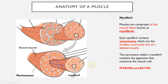Each myofibril contains a sarcomere. A sarcomere is the smallest contractile unit of a skeletal muscle — this is what contracts. It contracts because the sarcomere holds within it actin and myosin. Note: myosin is spelt M-Y-O-S-I-N, so please correct that if needed.